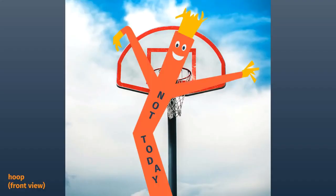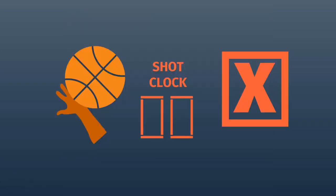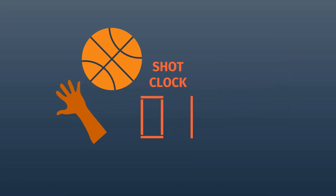One last rule about time: if you're going to shoot the ball as the clock approaches zero — either at the end of a quarter or for the shot clock — the ball has to be out of your hand when the clock hits zero. Ball still in hand? Shot doesn't count. Ball out of hand? Shot will count.